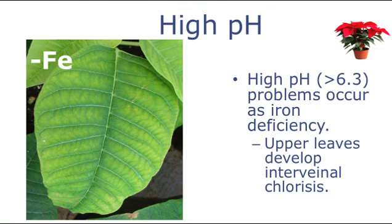Normally, symptoms of interveinal chlorosis occur when the pH exceeds 6.5. Also, note to take a look at the root system — overwatering or root rot can also compromise the root's ability to uptake iron.